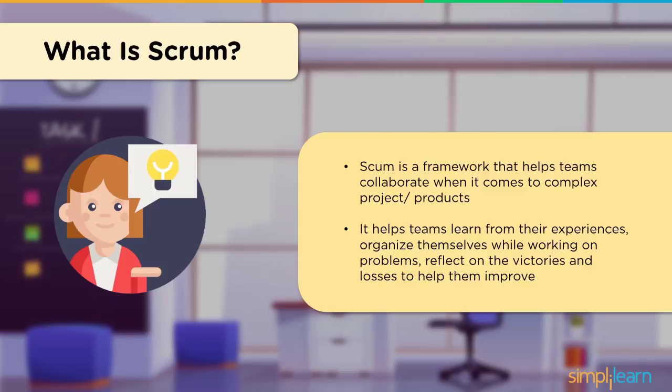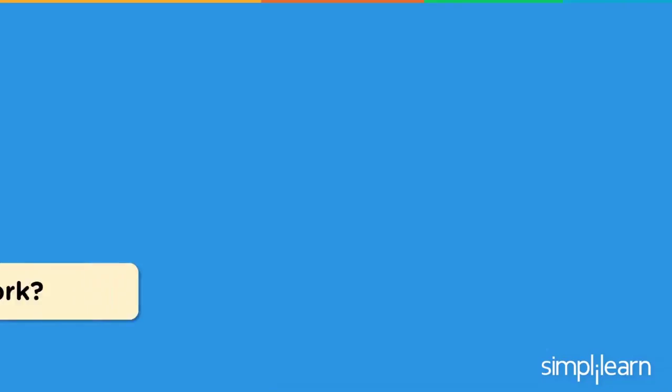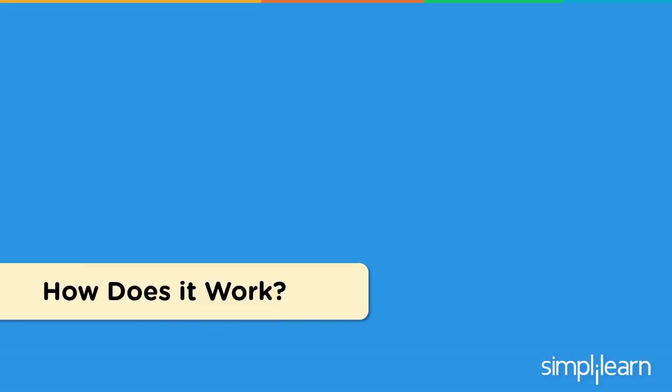With Scrum, teams are able to learn from their experiences — what worked out, what didn't. They're also able to organize themselves to handle their problems effectively, and improve themselves by reflecting on them. So, how does Scrum work?